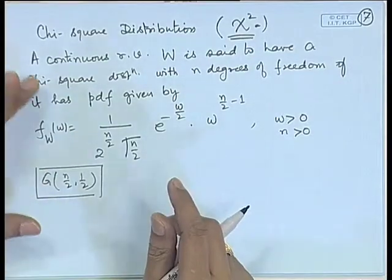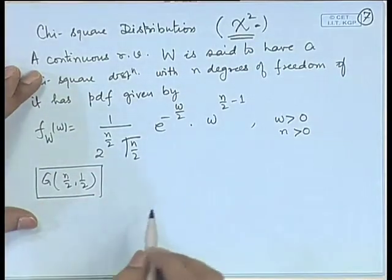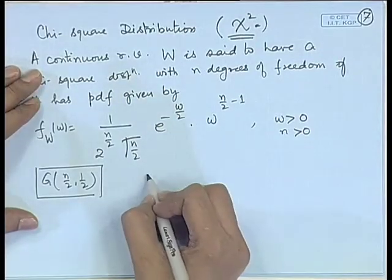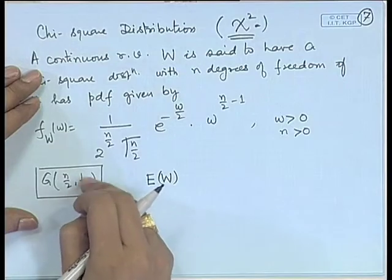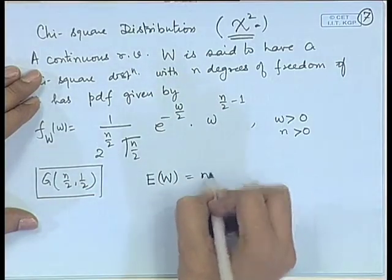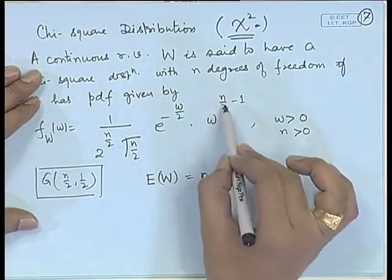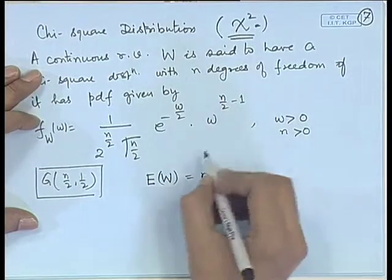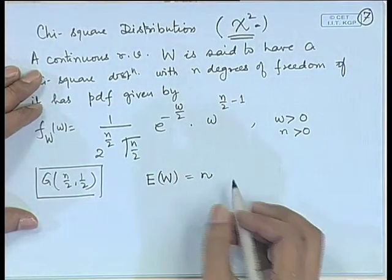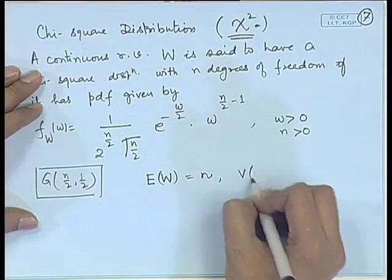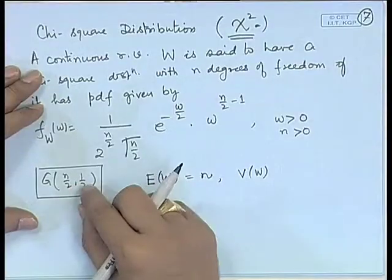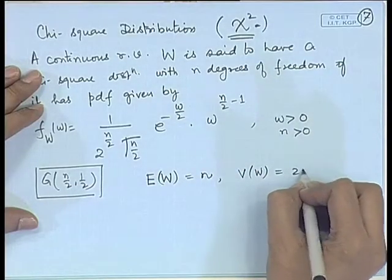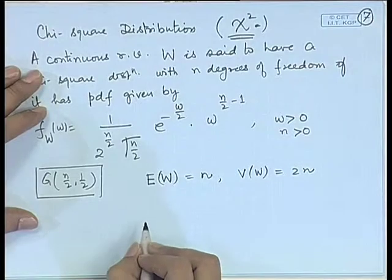Before doing those things, let us look at the usual characteristics like mean, variance, and other things. Since it is a gamma distribution, we already know the mean — it will be (n/2)/(1/2), which equals n. So the term we are calling degrees of freedom is actually the mean of the chi-square distribution. Similarly, the variance in gamma(r, λ) is r/λ², so it becomes (n/2)/(1/2)² = 2n, that is 2 times the degrees of freedom.